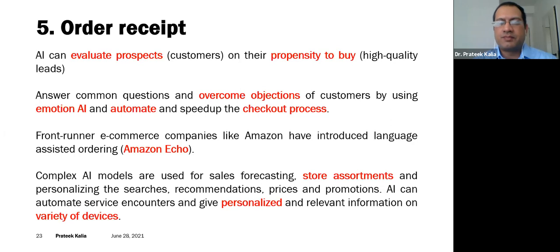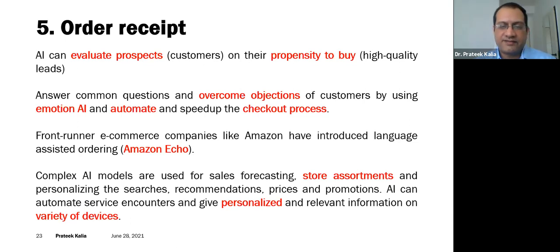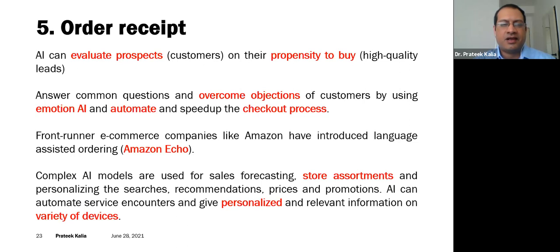Fifth is order receipt. AI can evaluate prospects based on their propensity to buy. Similarly to how a shopkeeper tries to overcome a customer's objections, emotion AI will automate the process and speed up the checkout. A common example is Amazon — you can simply talk to the device and order something through it. All these processes are very personalized and available across a variety of devices: mobile phone, tablet, or laptop. You are good to go — ready on the go, wherever you are.